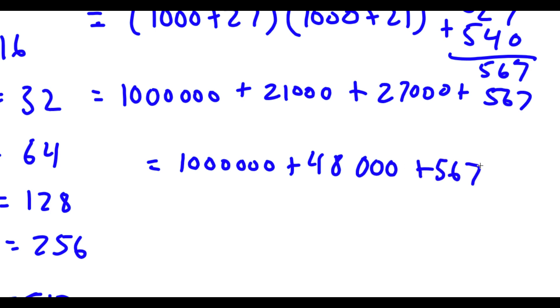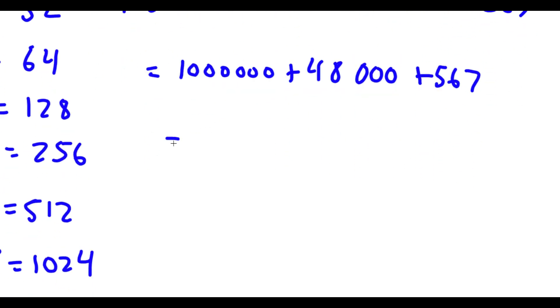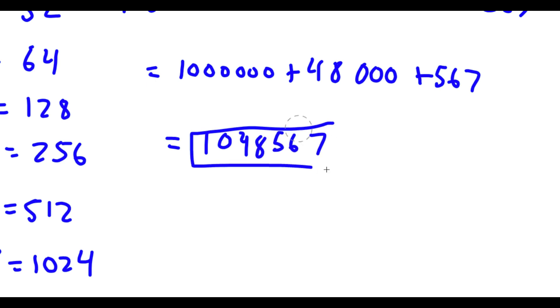Now I have plus 567. And if I add all these together — 1,000,000 plus 48,000 plus 567 — I get 1,048,567. So this is my answer.